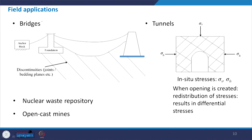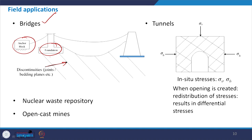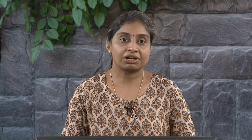For bridges, there is a foundation and anchor block with discontinuities indicated. Unless we know the orientation and type of rock, we cannot proceed with proper design of foundations, anchor blocks, or abutments. So in the case of bridges, it is equally important to know rock engineering.